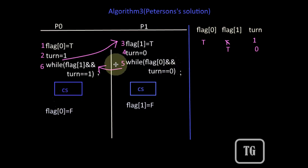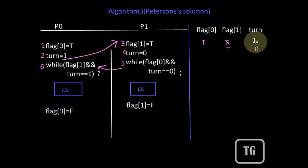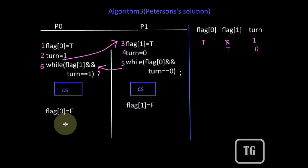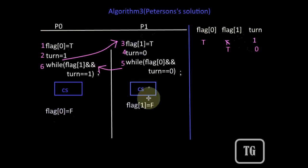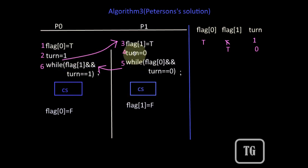Thus one of the processes will always continue with the critical section. In this case, if the value of turn is 0, P0 continues with the critical section first, and if the value is 1, P1 will continue. The processes are not blocked and there is no chance for deadlock. The process which performs the last update on the turn variable will wait there, and the other process will continue.